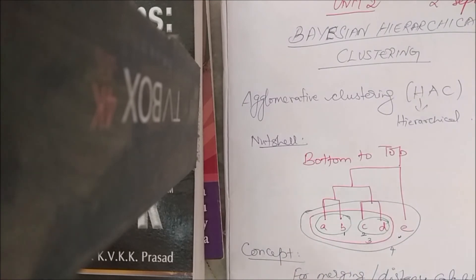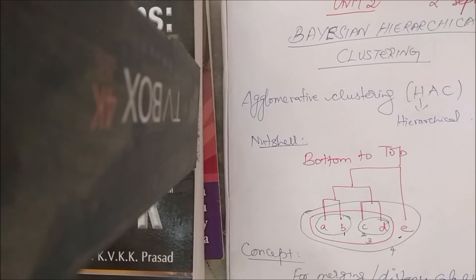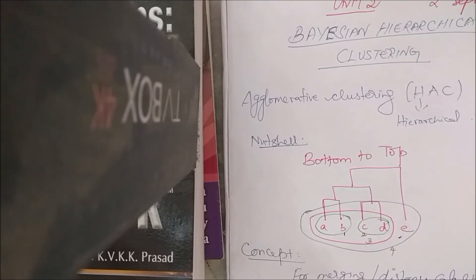Hello, welcome to today's class. Today we are going to see about Bayesian hierarchical clustering. We already know about hierarchical clustering and there are two types: agglomerative, which is a bottom-up approach, and divisive, which is a top-down approach. In agglomerative clustering, each data point starts as its own cluster and you group them until you arrive at one single big cluster.